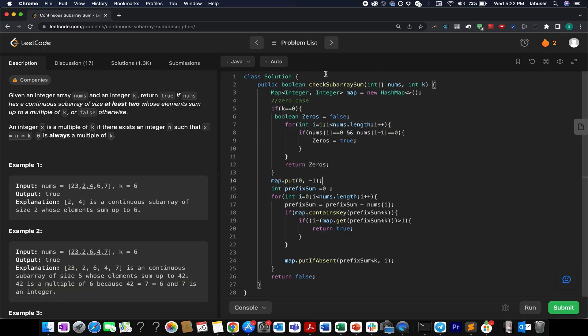Let us walk through the core algorithm first. I have created a map wherein the key of the map is of type integer. The value is again of type integer. This is going to store the remainder. This is going to store the index at which this remainder occurs. And one corner case I am going to talk about later on.